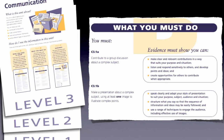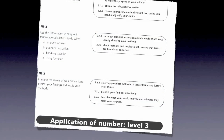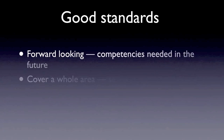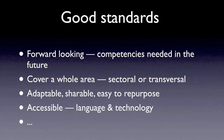This is another kind of standard: standards for key competencies developed in the UK. You will see in these standards a very detailed level of information — the evidence that you will provide in order to get a qualification. The competencies are extremely detailed in terms of what is expected from a person who is competent at level 3 in communication. Another example is about application of numbers at level 3. Good standards are forward-looking — they describe the competencies needed in the future, not the past or today. They are tools for transforming a sector, covering a whole area, transversal like management or a sector like education. They should be adaptable, shareable, easy to repurpose, and accessible in terms of language and technology.